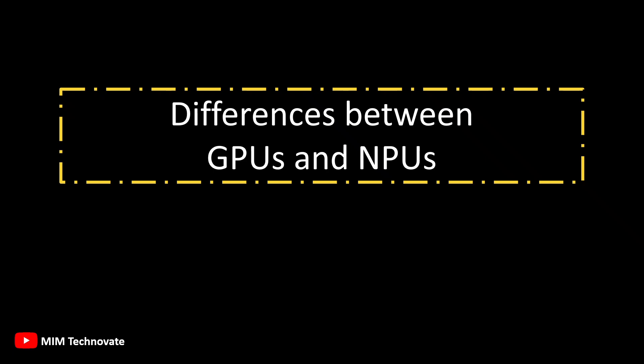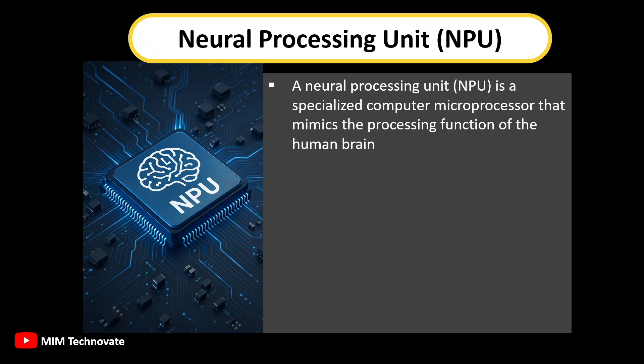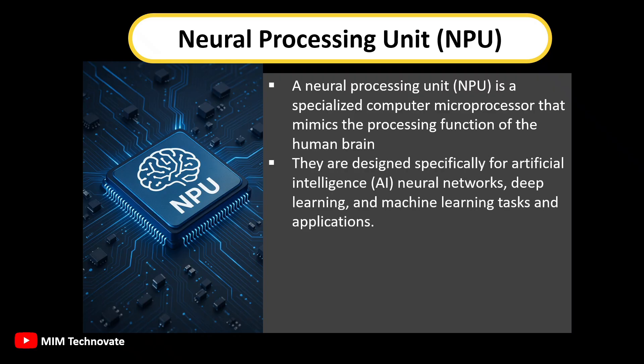Differences between GPUs and NPUs. A neural processing unit is a specialized computer microprocessor that mimics the processing function of the human brain. They are designed specifically for artificial intelligence, neural networks, deep learning, and machine learning tasks and applications.